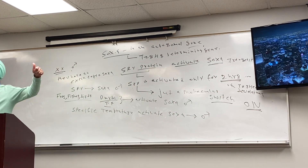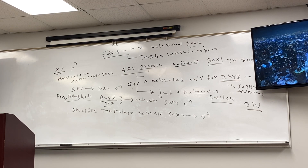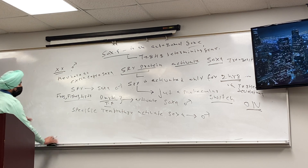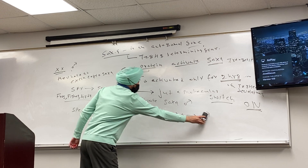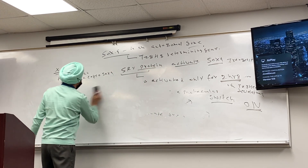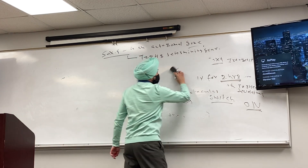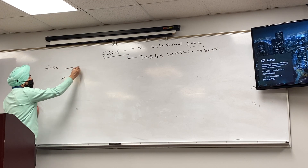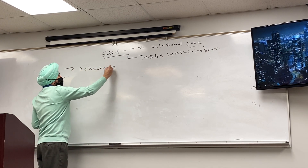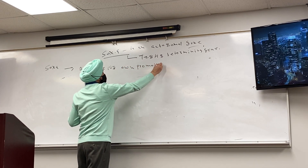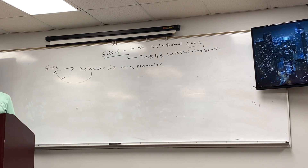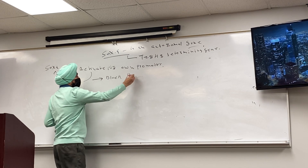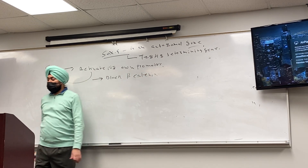So SOX9 is the real gene which is telling you whether you can be male or female. What does SOX9 do? Number one, it activates its own promoter — a kind of feedback loop. And then it blocks beta-catenin, which means no ovary — therefore no ovary.